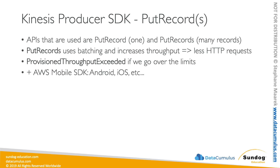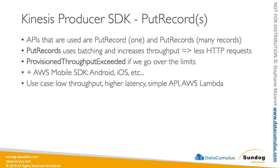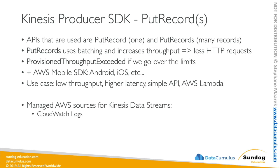The producer SDK can be used on applications and mobile devices such as Android and iOS. You would choose the producer SDK for low throughput use cases, when you don't mind higher latency, want a simple API, or are working from AWS Lambda. There are also managed AWS sources that use the producer SDK behind the scenes: CloudWatch Logs, AWS IoT, and Kinesis Data Analytics, which can produce back into Kinesis data streams.